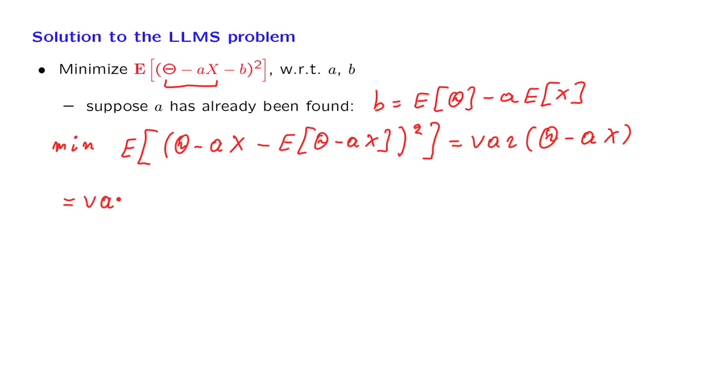And the formula tells us that the variance of the difference of two random variables is the variance of the first random variable plus the variance of the second. And when we pull a outside the variance, that gives us a contribution of a squared.